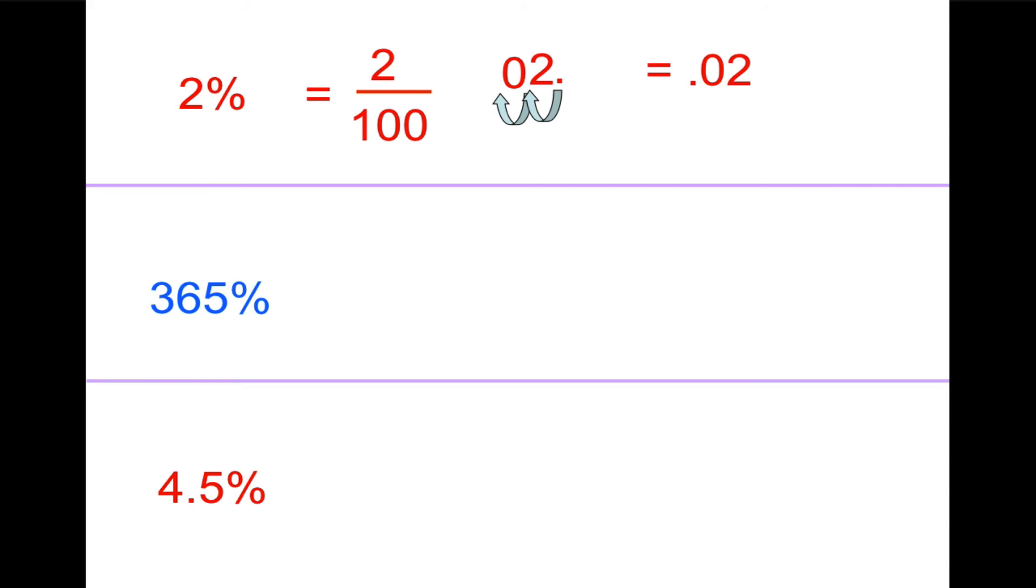365% would be 365 divided by 100. You can tell already this is going to be larger than 1, right? Because 365 divided by 100 equals 3.65.